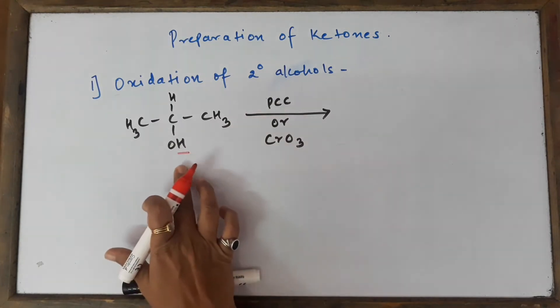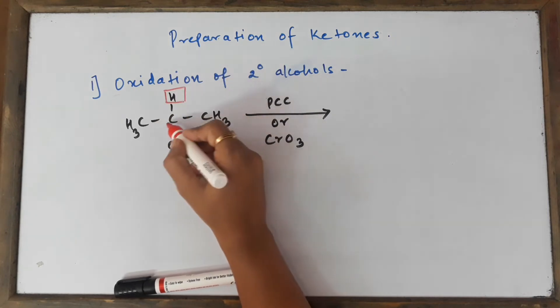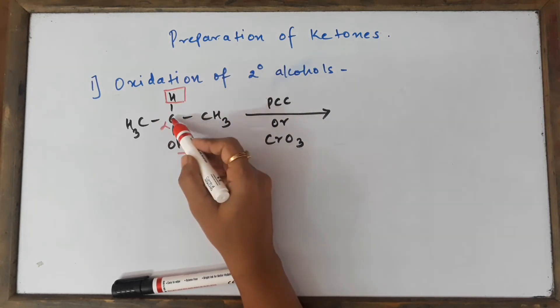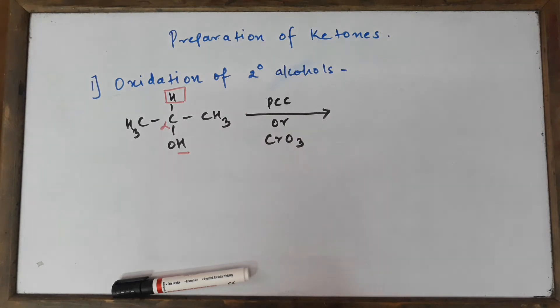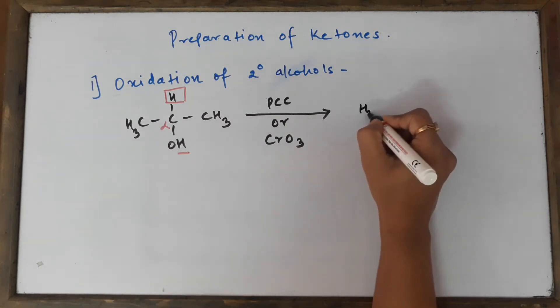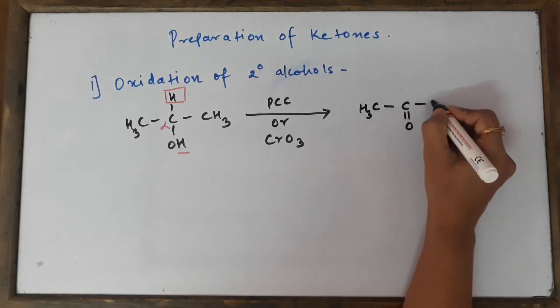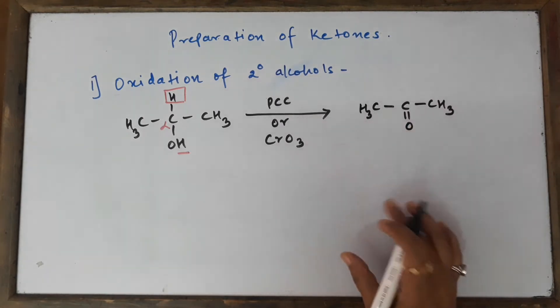Now what is going to happen is we are going to remove the hydrogen atom from the hydroxyl and also the alpha hydrogen atom. This is my alpha carbon atom, the one which is attached to the functional group. Just remove these two hydrogen atoms and what you get is your ketone.